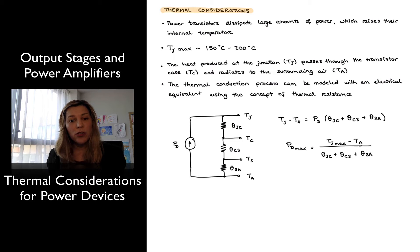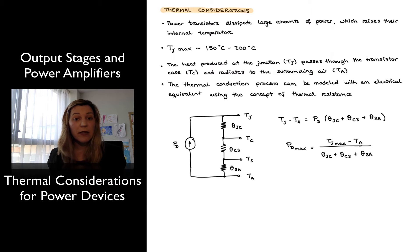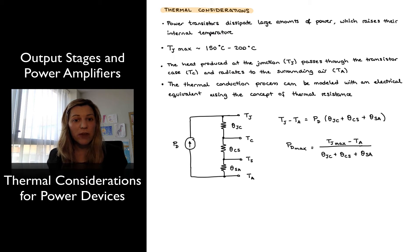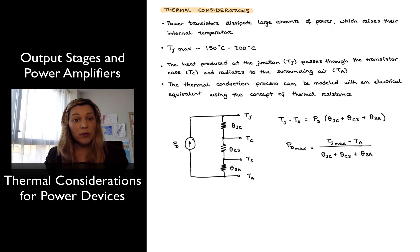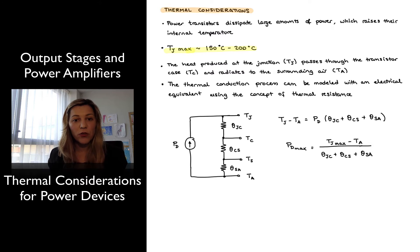In this video we are going to talk about thermal considerations that we need to keep in mind when we are designing using power devices or power circuits in general. We've already seen that power transistors can dissipate large amounts of power, and this power dissipation produces a rise in the internal temperature of the device, specifically the collector junction temperature. There is a maximum junction temperature that the transistor can withstand before it suffers permanent damage, and that's typically listed in the ABS-MAX table in the datasheet. It's referred to as TJmax, or maximum junction temperature, and for a BJT transistor it tends to be in the range of 150 to 200 degrees C.